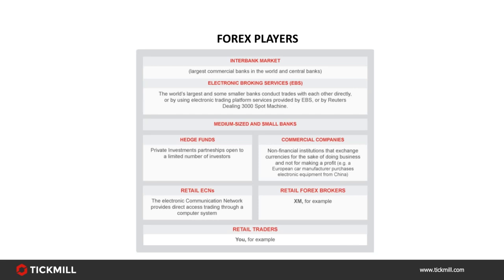Finally, large commercial companies — the players the market was originally built for. Because large commercial companies take part in foreign exchange for business purposes, for example major airlines buying fuel in different countries or car manufacturers buying parts globally, they use forex to get the best deal on their currency needs. The key is that most of these companies use the forex market to protect themselves against adverse currency movements — this is called hedging. They often use forward contracts, which are derived from the spot price but differ slightly according to the length of time the exchange rate is locked in for.